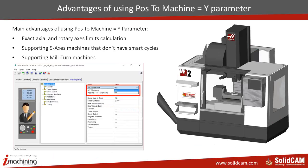Let's start with the advantages of using the post-to-machine YES parameter. This parameter is located in our VMID file. You can go to the working style and see the post-to-machine YES parameter — there is a trigger for yes or no. SolidCAM generates this parameter to get correct axis and rotary limits calculation, which is one of the very important ones. It also supports five-axis machines that don't have smart cycles, and supports very complex mill-turn machines.